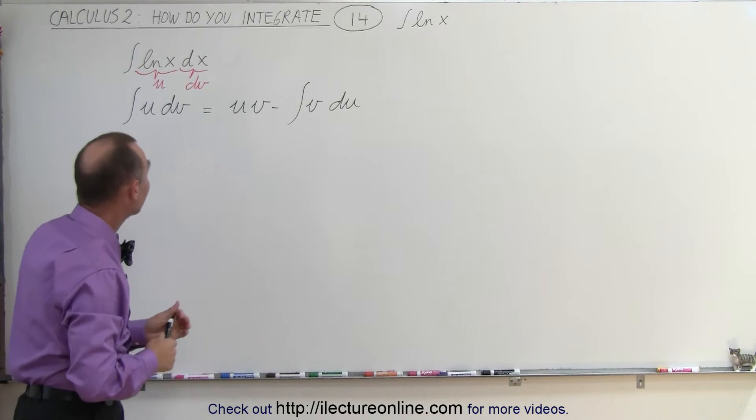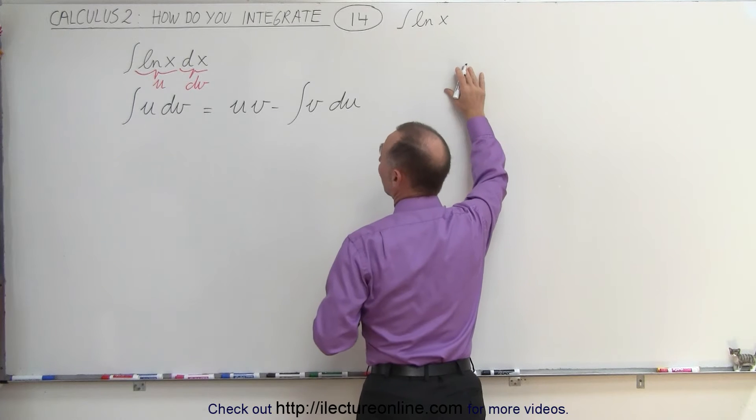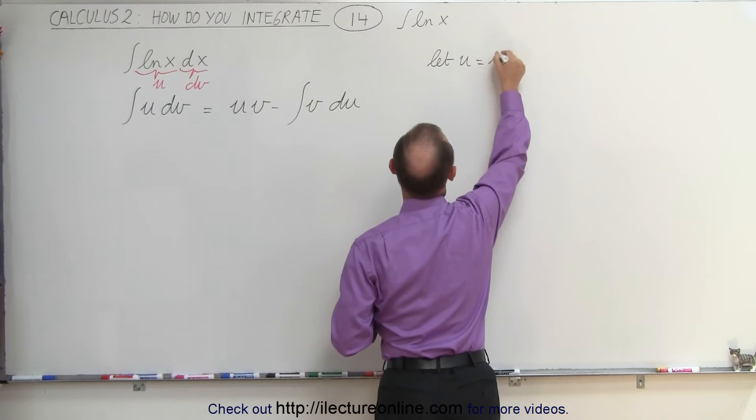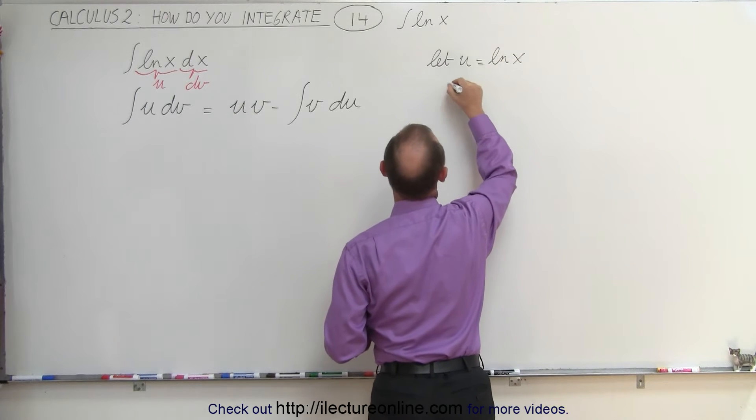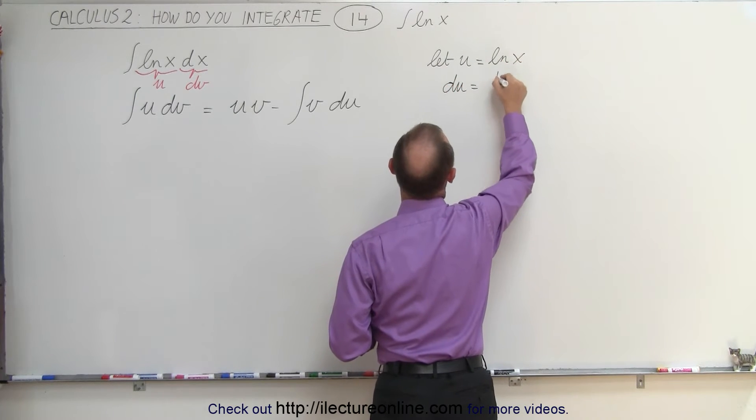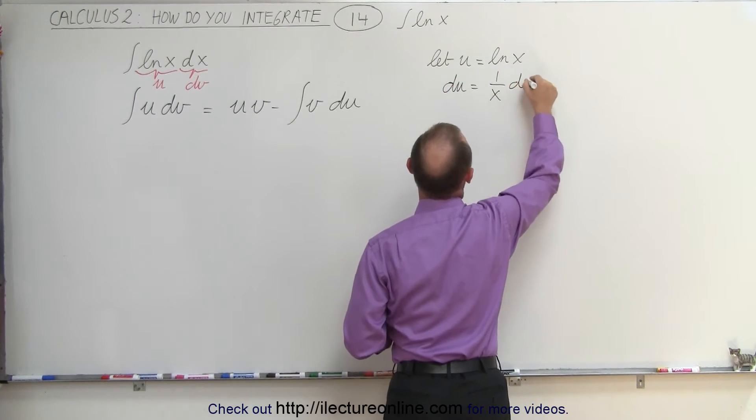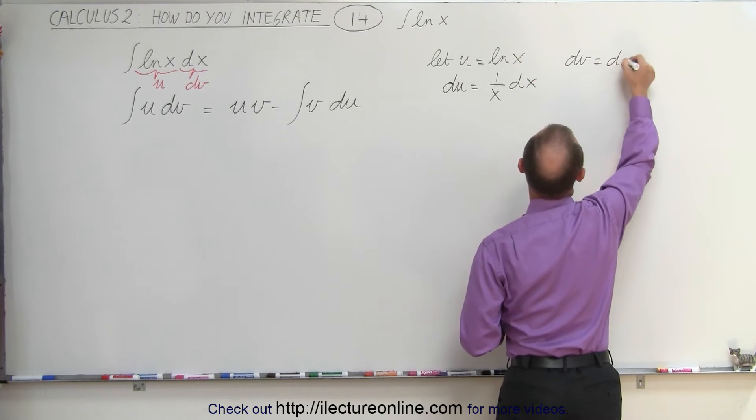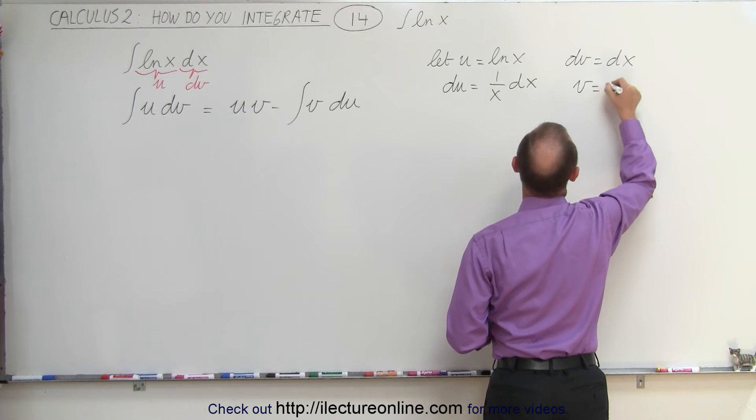So what that means is that you have to say let u equal the natural log of x, which means that du is equal to 1 over x times dx, and let dv equals dx in such way that v equals x.